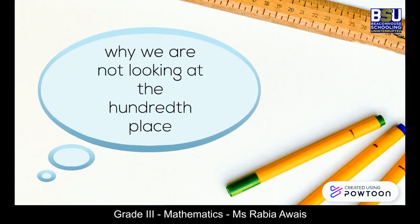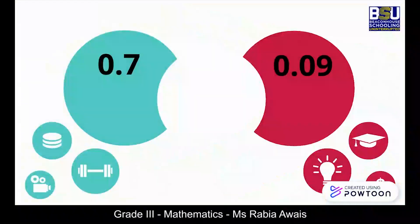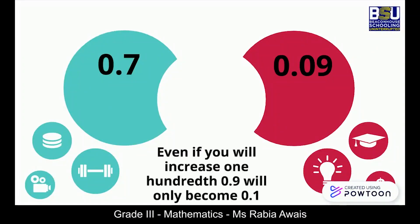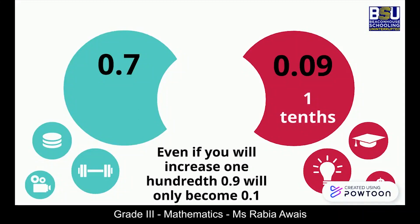You might be wondering why we are not looking at the hundredths place. That's because number 0.09 has a nine in the hundredths place, so even if you add another hundredth to it, it will only make one tenth, whereas the number 0.7 already has seven tenths.